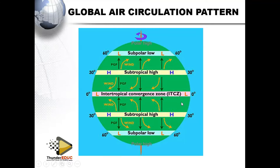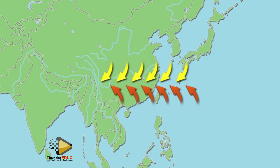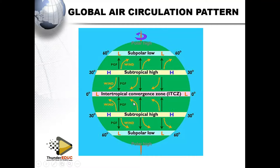The ITCZ stands for Intertropical Convergence Zone — intertropical means within the tropics. Convergence means coming together, which is why you see these winds coming together towards this point, moving air from a high pressure to a low pressure. Remember, winds move from high pressure to low pressure.